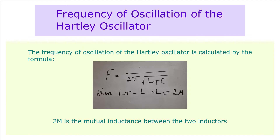Calculation to find the frequency of oscillation of a Hartley oscillator. The frequency of oscillation is calculated by the formula: F = 1 / (2π √(Lt × C)), where Lt = L1 + L2 + 2M. 2M is the mutual inductance between the two inductors.